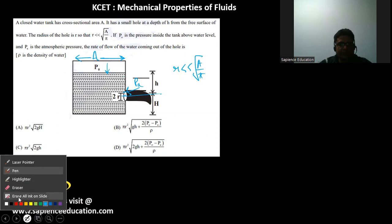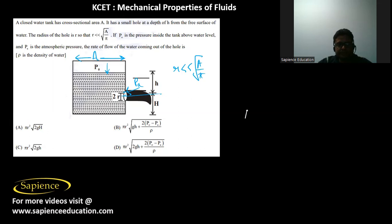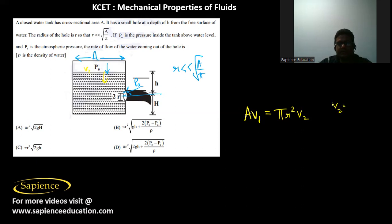Applying the equation of continuity: A·v₁ = πr²·v₂. This gives us v₂, and the volume flow rate will be πr²·v₂. We also apply Bernoulli's principle: P₀ + ρgh + ½ρv₁² = pA + ½ρv₂².